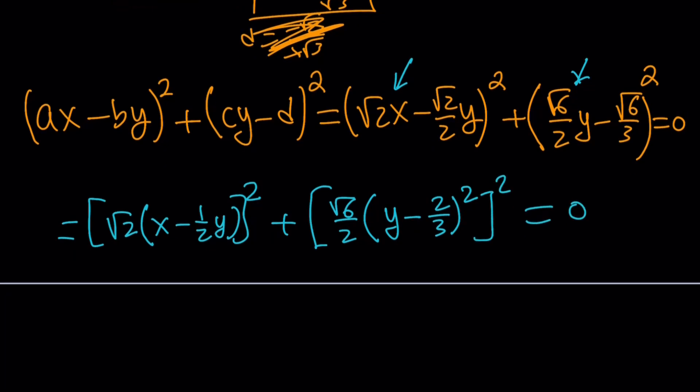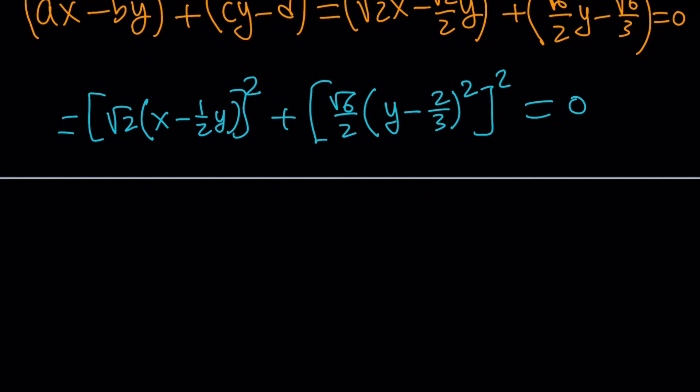Now let's go ahead and square the coefficients, the constants that are outside the parentheses. Not the brackets. Square root of 2 squared is going to be 2. So this is going to give me 2 times x minus y over 2 squared. And this is going to give me 6 over 4, which is 3 halves, times y minus 2 thirds squared. And then, there shouldn't be a square here. I think I messed up on that one. I put the square sign twice. Okay, here we go. And then this is equal to 0.